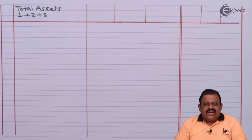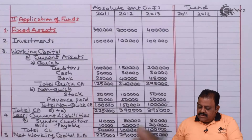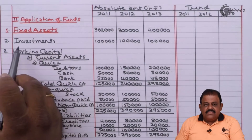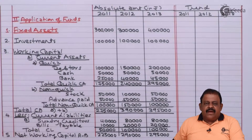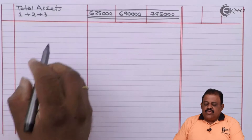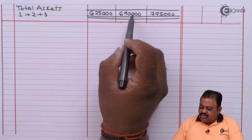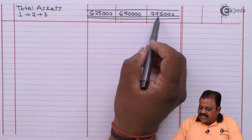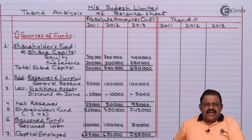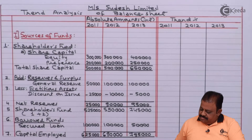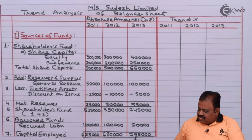Total assets equals fixed assets plus investments plus working capital: 6 lakh 25 thousand, 6 lakh 90 thousand, and 7 lakh 95 thousand. These amounts exactly match the total capital employed figures — 6 lakh 25 thousand, 6 lakh 90 thousand, and 7 lakh 95 thousand — confirming the vertical balance sheet is correct.